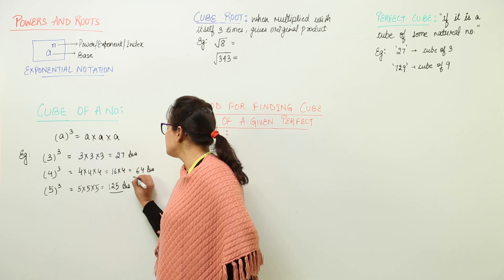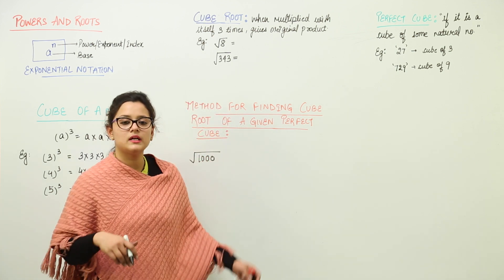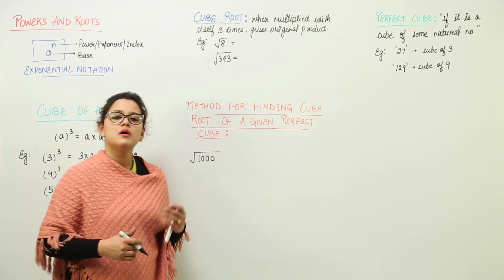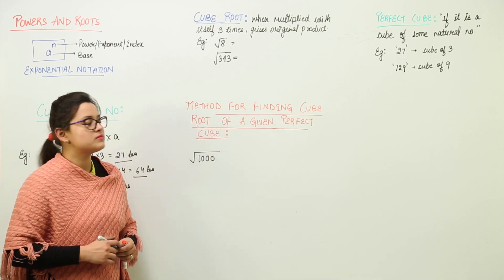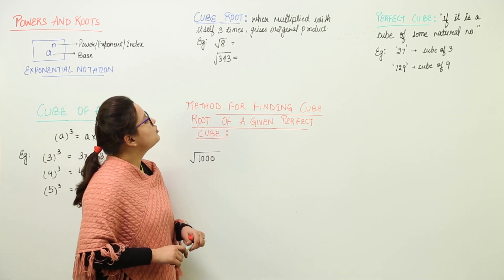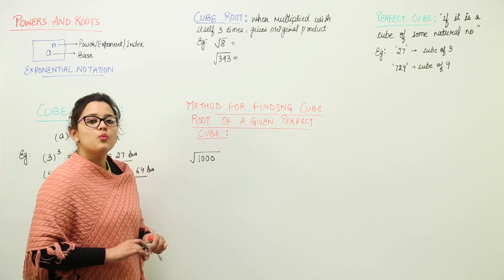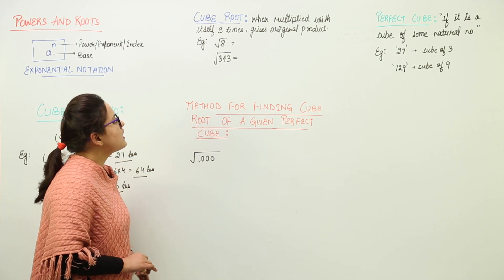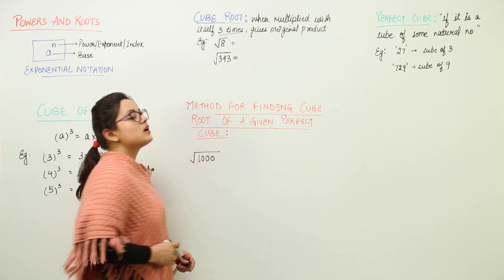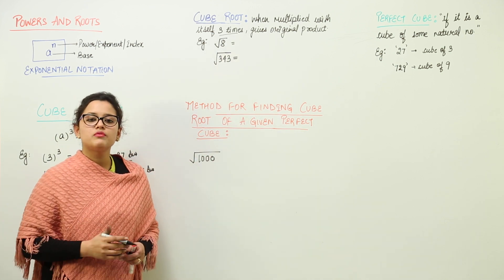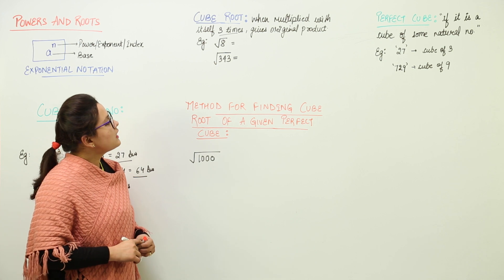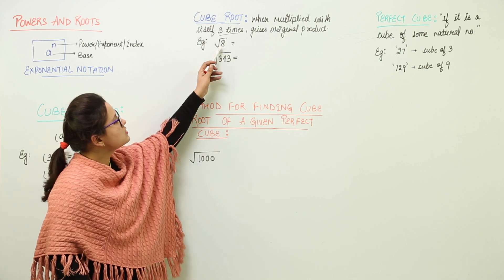This is how you can find out the cubes of any number, that is that number multiplied by itself 3 times. Next we have to find the cube root. What is cube root? When multiplied with itself 3 times, please pay attention, we are multiplying the number itself 3 times so that you get the product as this original number.